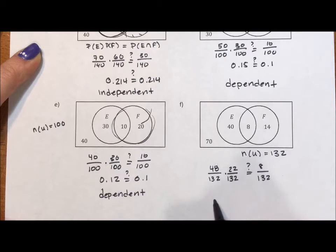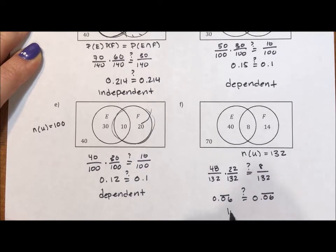Throw this into a calculator, we get 0.06 repeat. Throw this into a calculator, we get 0.06 repeat. So these two events are independent.